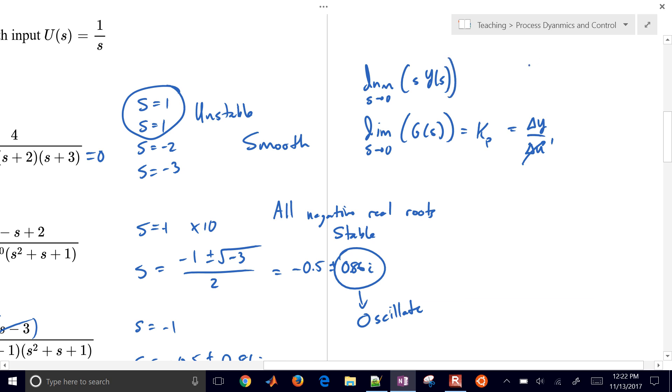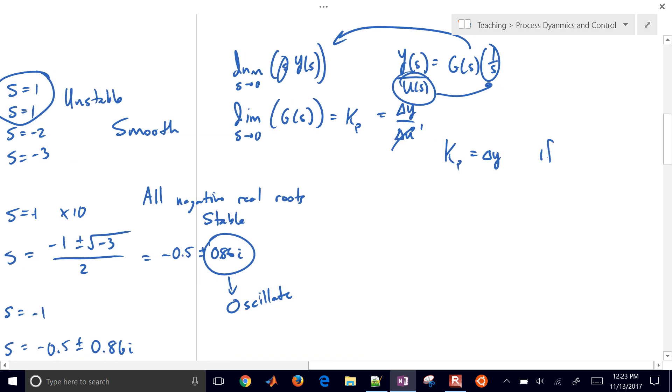But in this case, we have y of s equals, divided by u of s equals g of s, but u of s equals 1 over s. And so if we just plug that in here, the 1 over s is going to cancel with the s. And so that's why our gain is going to be equal to the delta y if delta u equals 1.